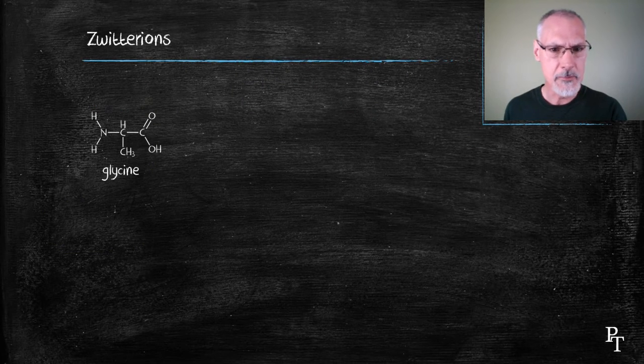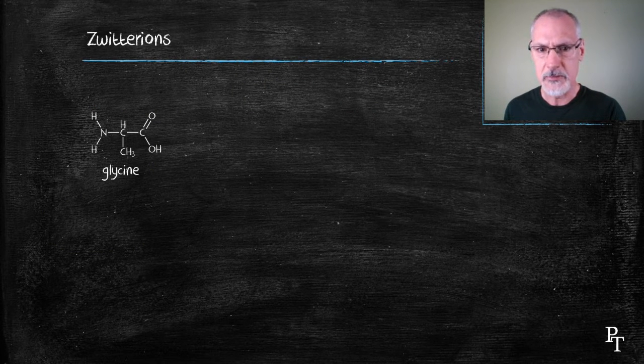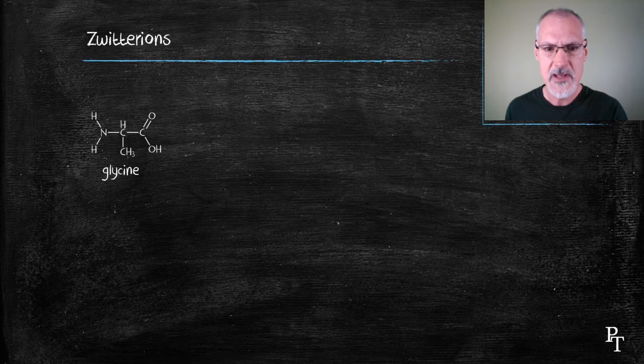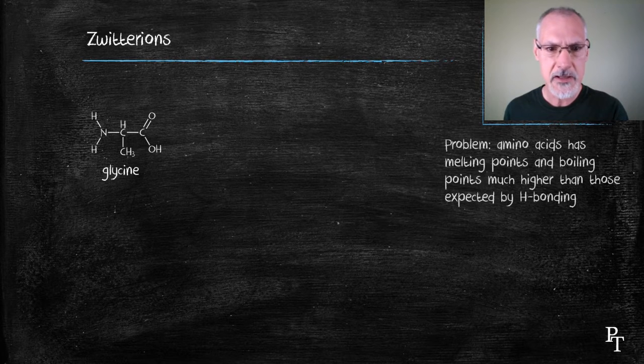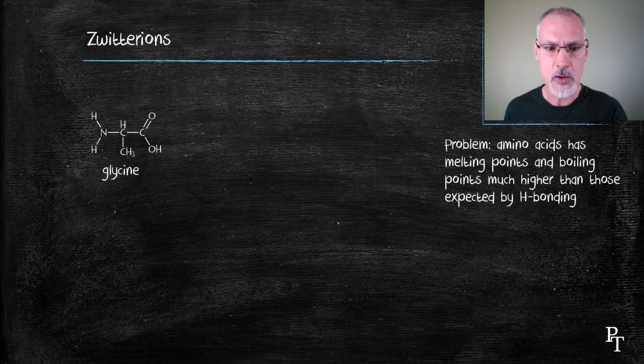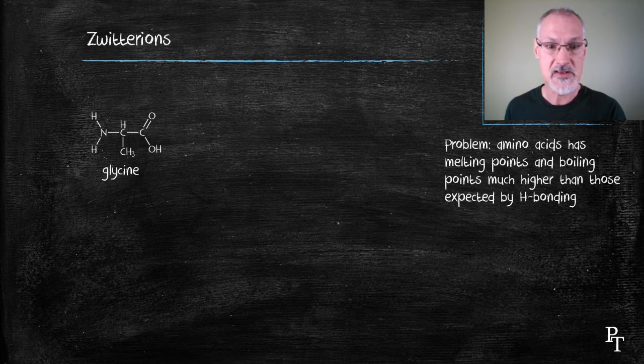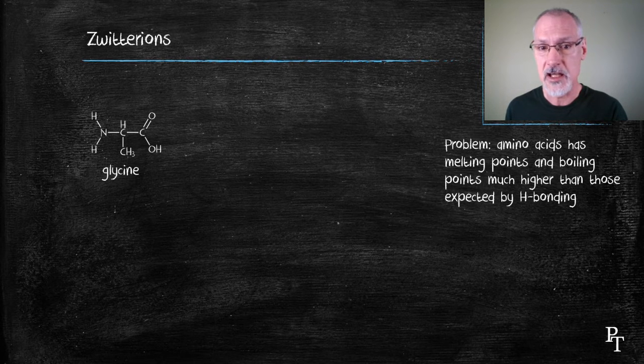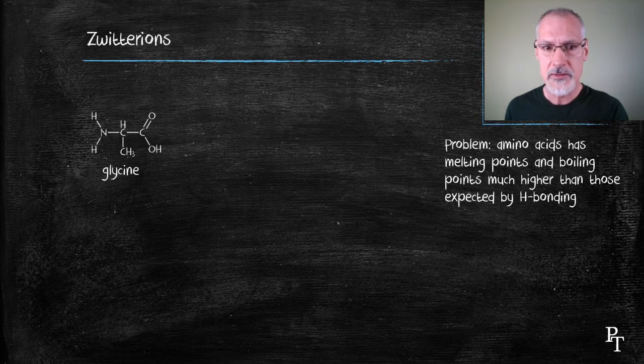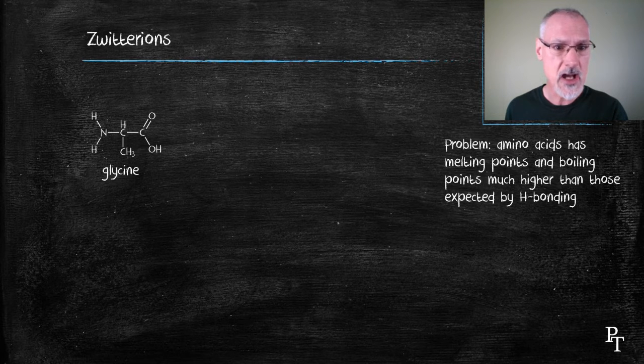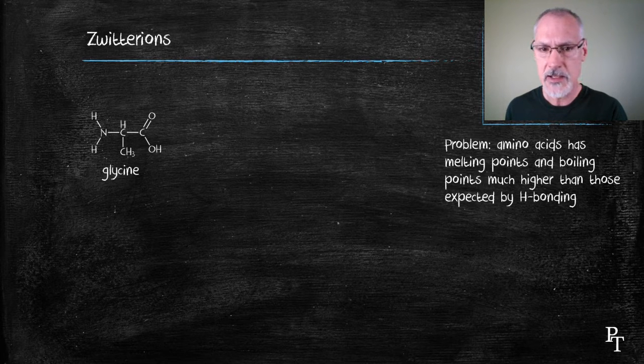First off, I want to introduce a small problem that puzzled scientists about amino acids. First off, we expect hydrogen bonding in these. The presence of the OH group and the NH group would suggest that hydrogen bonding would take place and these would have fairly high melting and boiling points. But their melting and boiling points were actually much higher than those anticipated through hydrogen bonding.